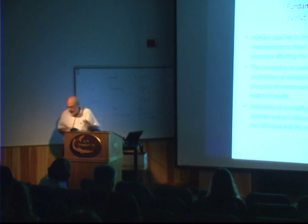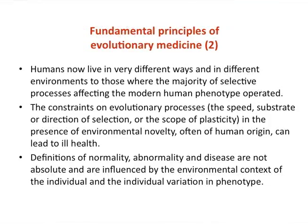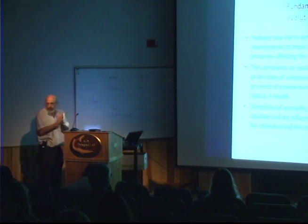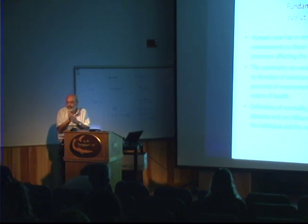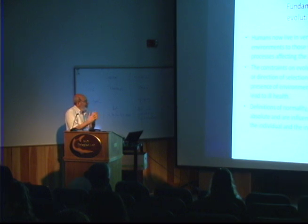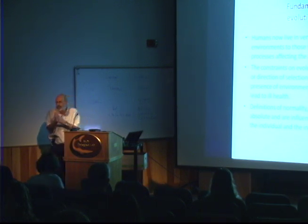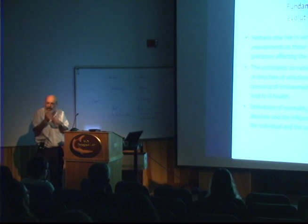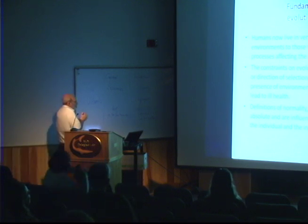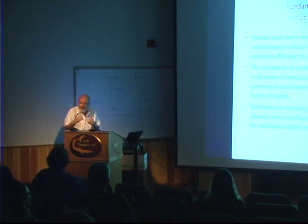If we go on to my second set of principles, this is where we come up with the concept of mismatch. We basically live in very different environments to those through which the bulk of selective processes that define what we are operated. And there are constraints about the speeds and direction of selection, the scope of plasticity, that constrain the speed and nature of evolutionary processes. That means we can be mismatched with the environment in which we live, and that can lead to ill health.